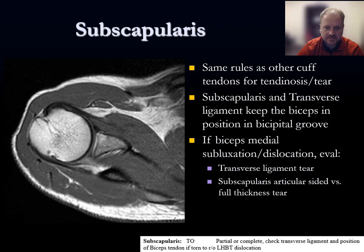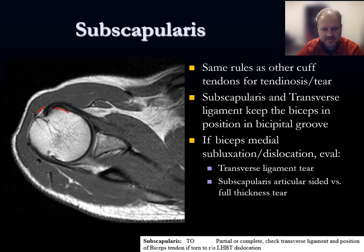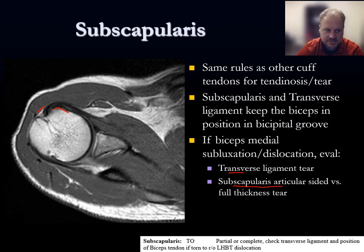Near the subscapularis there are other important structures that maintain the architecture of the shoulder, particularly keeping the biceps in the bicipital groove. The transverse ligament crosses the roof of the bicipital groove, and the subscapularis is immediately adjacent. If you see medial subluxation or dislocation of the biceps, those adjacent structures — the transverse ligament and/or the subscapularis — are likely also abnormal, since they are what normally prevent the biceps from dislocating. An articular-sided or full-thickness subscapularis tear can allow the biceps tendon to jump out of the groove and even locate in the glenohumeral joint.